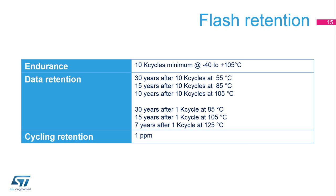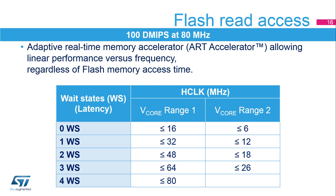In order to read the flash memory, it is required to configure the number of wait states to be inserted in a read access, depending on the clock frequency. The number of wait states also depends on the voltage scaling range. In range 1, the flash memory can be accessed up to 80 MHz with 4 wait states, and with 0 wait states up to 16 MHz. For range 2, it is up to 26 MHz with 3 wait states. Thanks to the Adaptive Real-Time Memory Accelerator (ART Accelerator), the program can be executed with 0 wait states independent of the clock frequency, providing almost linear performance up to 100 Dhrystone MIPS at 80 MHz.